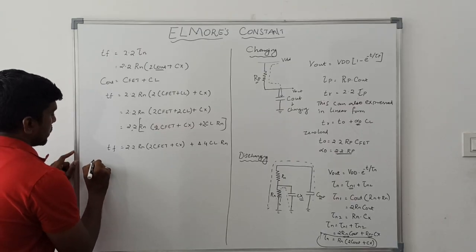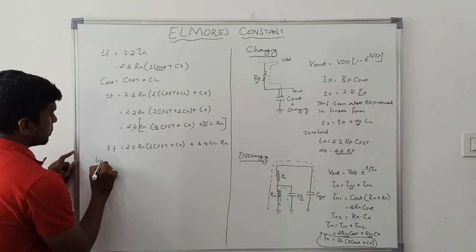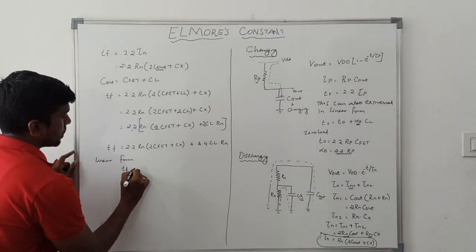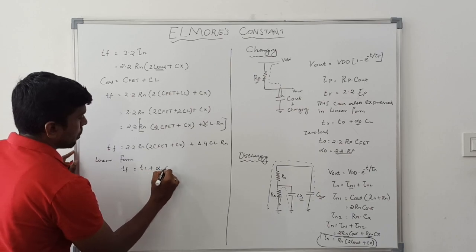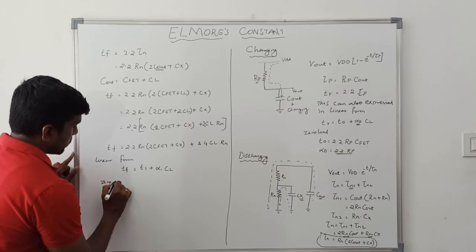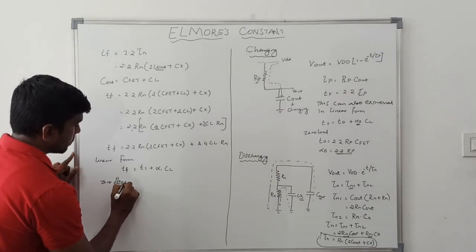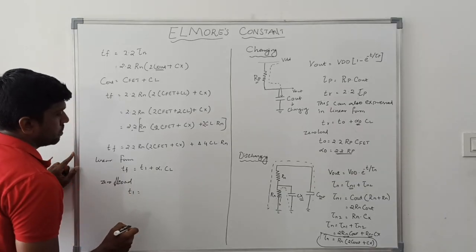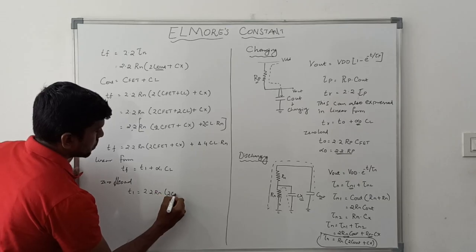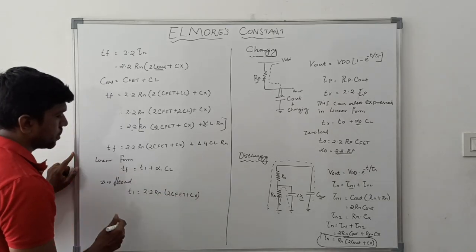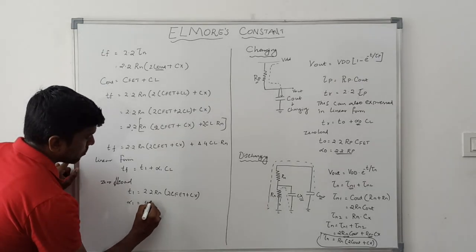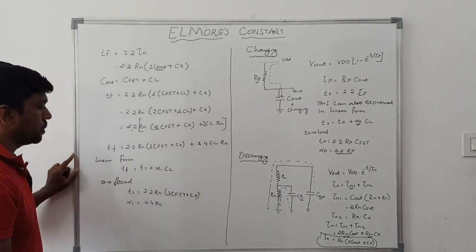This equation is expressed in linear form as: Tf = T1 + α1 × CL, where CL is the load capacitance. At zero load condition, T1 = 2.2 × RN × (2Cfit + Cx). Alpha α1 is the slope of time constant, with value α1 = 4.4 × RN.